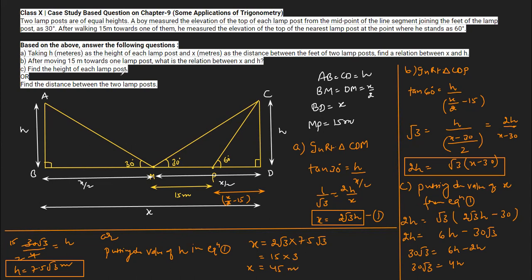The distance between the two lampposts is 45 meters. We have now completed all parts of this question. Although these are case study based questions and writing the verbal conclusion is optional, if you have time you should write: 'Hence the distance between the two lampposts is 45 meters.' Thank you very much.